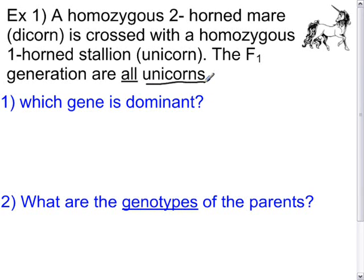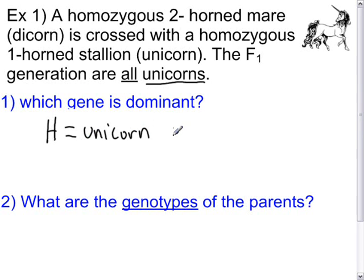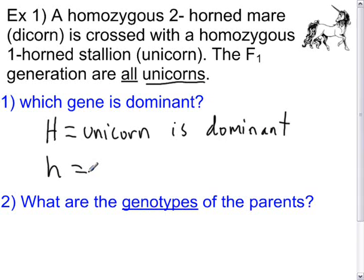The dominant gene must be the gene coding for unicorns, given that all the F1 offspring — all the children — are unicorns. I will pick H as my unicorn or dicorn gene, so capital H will represent the unicorn gene. This means that lowercase h is the recessive allele.